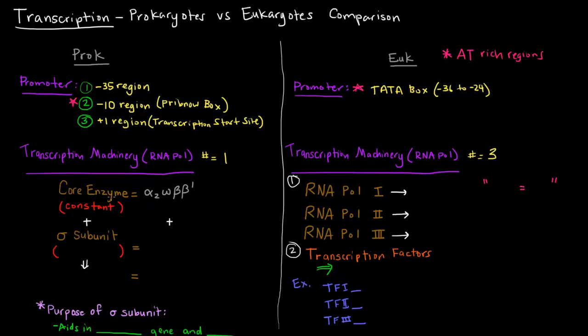Now, this core enzyme is added to this sigma subunit. This sigma subunit is variable, and I'll talk more about it in just a moment. But together, if you put this core enzyme with all these subunits with a specific variable sigma subunit, what you get is this thing called a holoenzyme. And so that's basically just the core enzyme and all of its subunits with the sigma subunit attached.